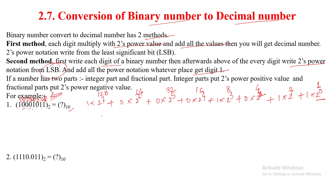Now multiplying each digit by its power value: 1×128 = 128, plus 0×64 = 0, plus 0×32 = 0, plus 0×16 = 0, plus 1×8 = 8, plus 0×4 = 0, plus 1×2 = 2, plus 1×1 = 1.